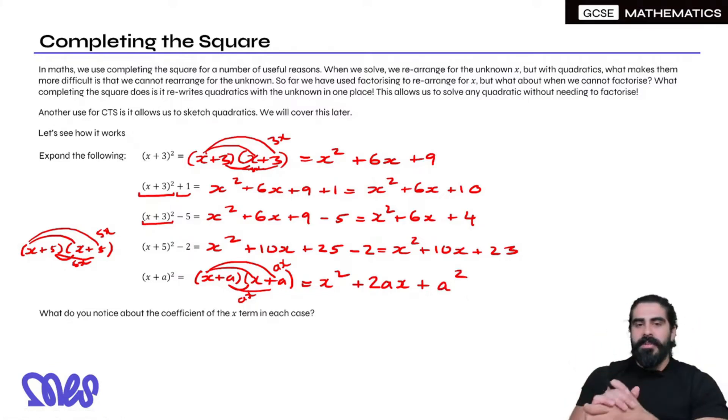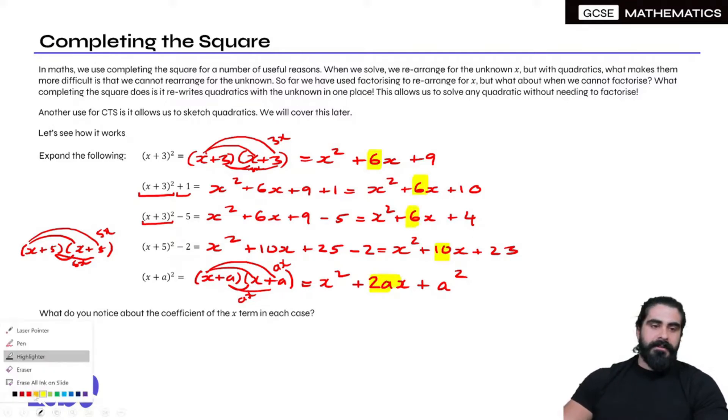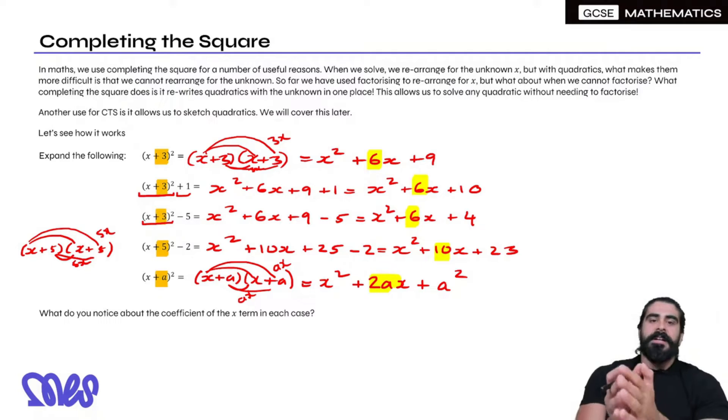Why have I done all these expansions? What do you notice about the coefficient of the x term in each case? Look at the coefficients of the x terms compared to what's in here. What do you guys notice? Look what I've highlighted in yellow compared to what I have highlighted in orange.